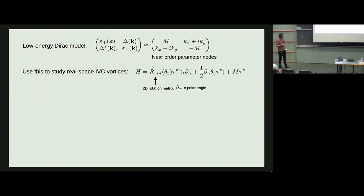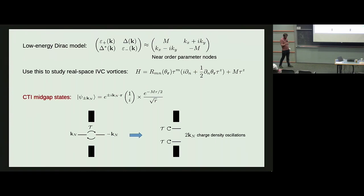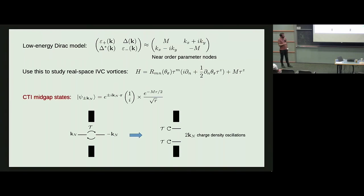Using the Dirac Hamiltonian, we can study what happens when introducing a real-space vortex in the order parameter. For the CTI, one finds two mid-gap states exponentially localized at the vortex core, one from each of the two gapped Dirac points in the Brillouin zone. These two states are interchanged by time reversal. Hybridizing the mid-gap states into the bulk in a time-reversal-symmetric way, one finds charge density wave oscillations at the vortex core with wavevector 2K_N, where K_N is the separation between the two massive Dirac points of the CTI.